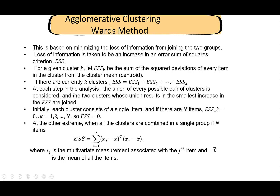At every step, Ward's method considers all possible unions of every pair of clusters, and the pair whose union results in the smallest increase in ESS — the smallest loss of information — is joined. You can imagine how complicated this is: even with four or five elements you must evaluate all possible pairs. This is a little painful to execute manually, so I will not ask you to do this by hand in the quiz.